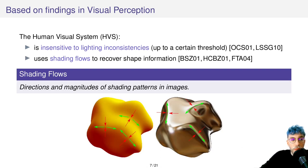Another key feature from our visual system is that it uses shading flows to recover shape information. Shading flows are directions and magnitudes of shading patterns in images. For the diffuse object here you can see that as the color gradient that lies at the surface. For the specular one you can see that as the compressions and stretchings of the reflected environment. That's how we recover the shape of these objects.